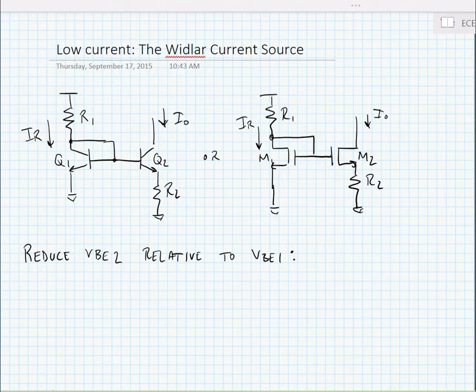The basics of this current source are that we're going to reduce VBE2 relative to VBE1, and we do that by placing a resistor R2 in the respective emitter or source terminal of the output stage.